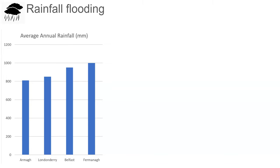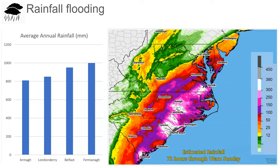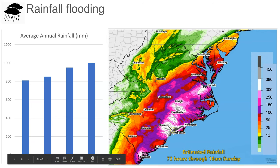Lurgan and Armagh have similar rainfall — around 800 to 850 millimeters of rain per year. Hold that in mind because that's going to be your yardstick. When I show you other figures, you've got to ask how big they are in comparison to what we get in Lurgan. Let's take a look at this map of the western coast of the United States.